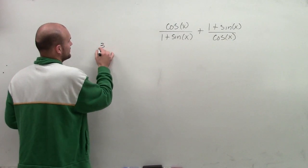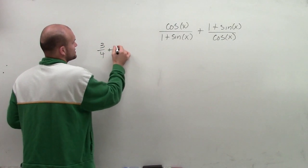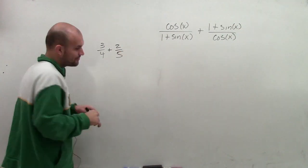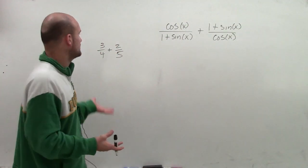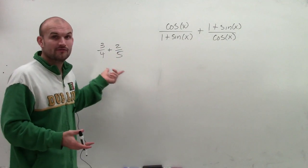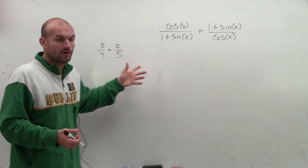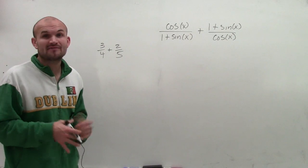So let's say we have 3 fourths plus 2 fifths. When adding fractions, we need to make sure that we have the same denominator. Therefore, I need to find the least common multiple between 4 and 5. Well, the least common multiple between 4 and 5 is 20.